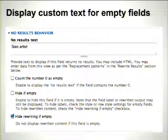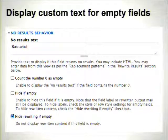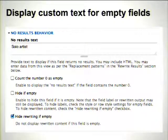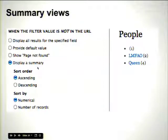No results behavior: Views has the ability to render some custom text or an area plugin in the case that there are no rows in the result set. But as well as that, Views has a feature that allows you to configure what should be rendered for a field in the case that the value for that field is null, zero, or missing. I just wanted to highlight this as it's hidden away in the field configuration settings. Summary views: a summary view is configured in the settings for a contextual filter and will render if the argument for that contextual filter is missing. It renders a list of potential arguments so you can drill down further into the content.